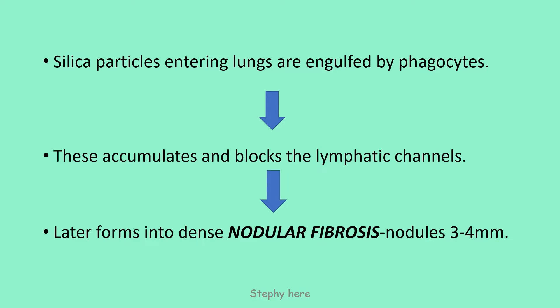The pathology is as follows. The silica particles which enter the lungs during respiration are engulfed by the phagocytes. These engulfed phagocytes accumulate and block the lymphatic channels of the lungs.